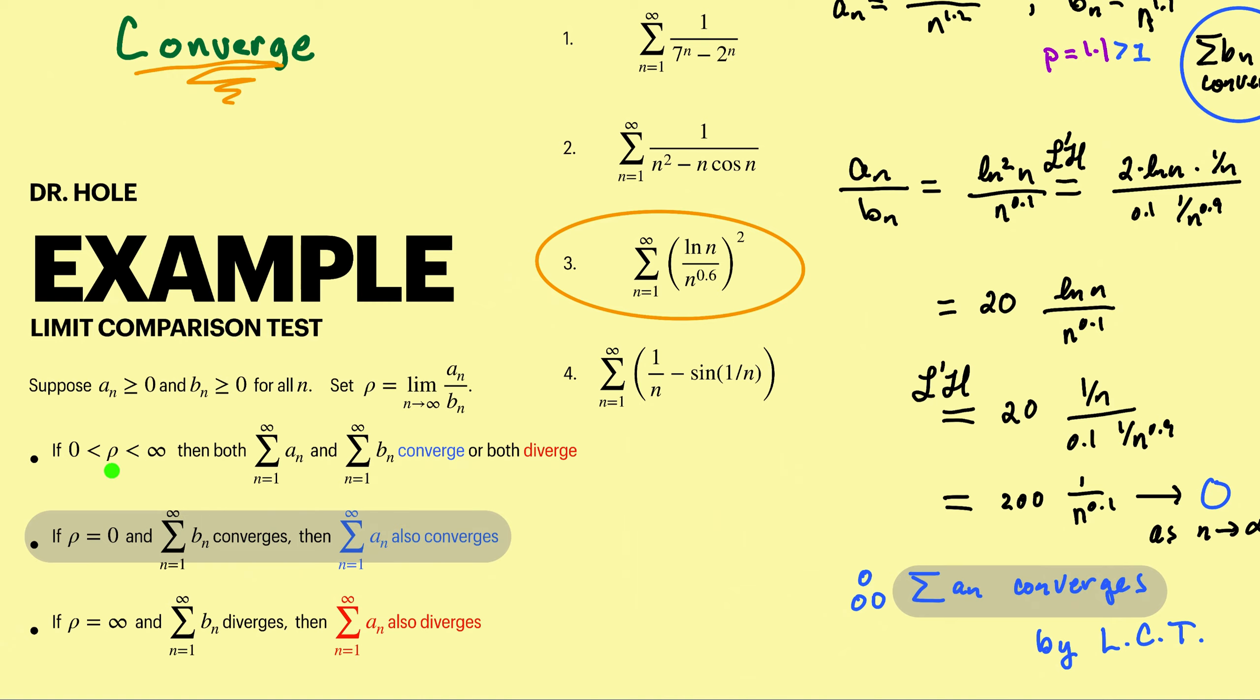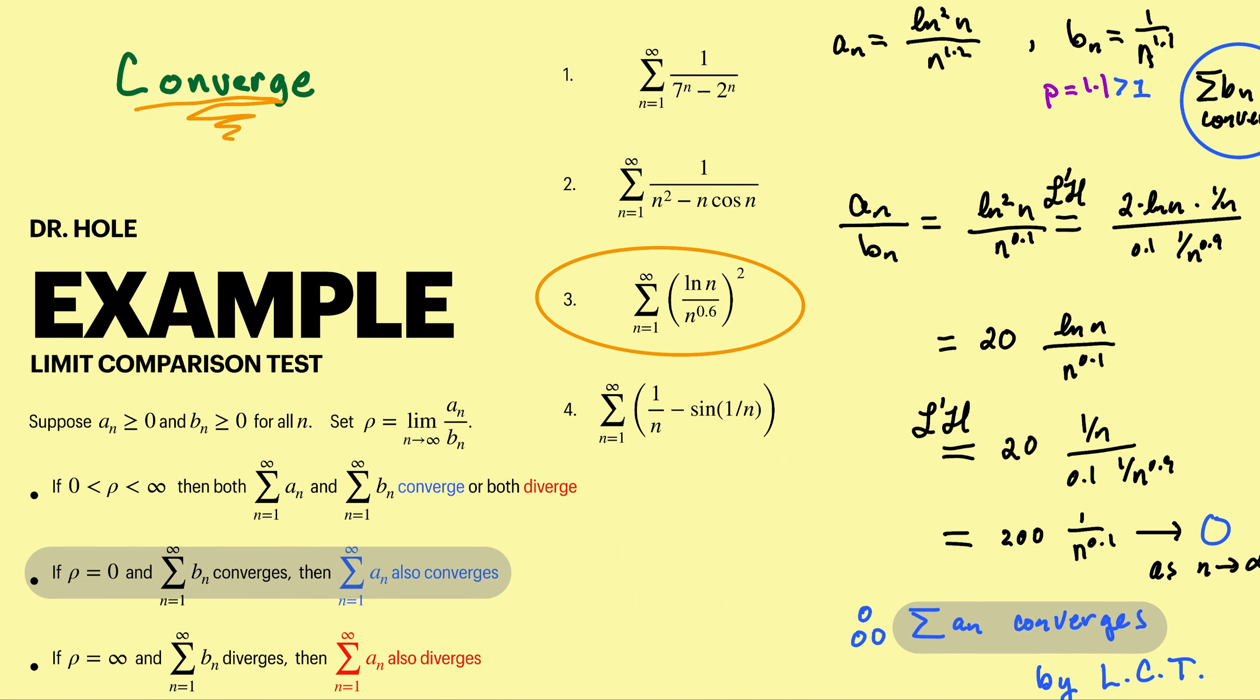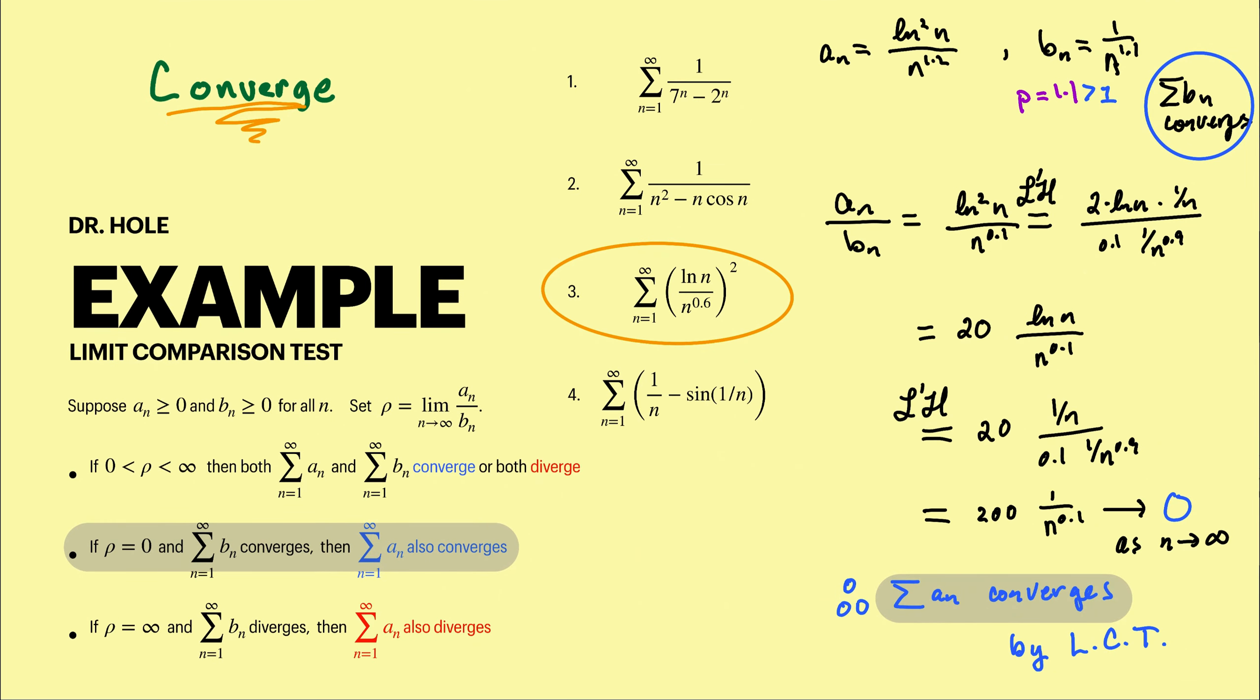Let's come back and look at LCT. So we're not getting a positive finite value, we're getting 0. And the b_n that we used was a P-series with P equaling 1.1, in other words a convergent P-series. Hence we can conclude that our given series will converge thanks to LCT. We found rho equaling 0.